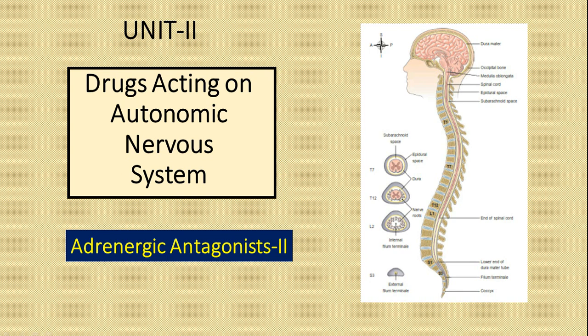Welcome to this second lecture on adrenergic antagonists. In this session we will see in detail about alpha adrenergic receptor antagonists and their medicinal chemistry. Alpha adrenergic receptors are divided into alpha-1 and alpha-2, but right now we have a total of eight different receptor subtypes identified in these two categories. Before going into the actual medicinal chemistry, let's have an idea on the kind of outputs these receptors control.